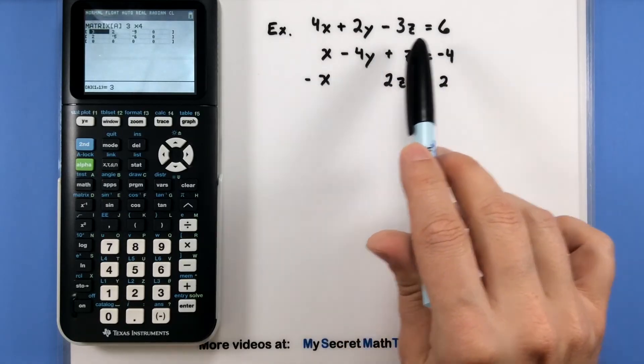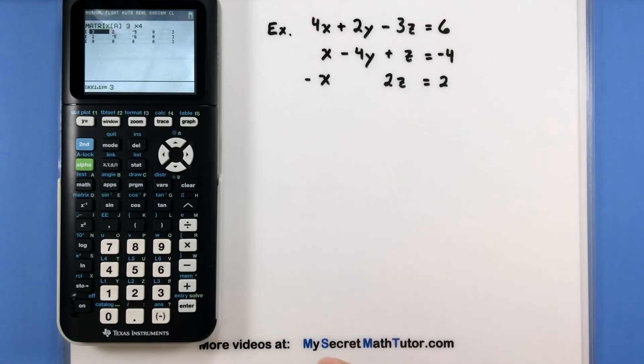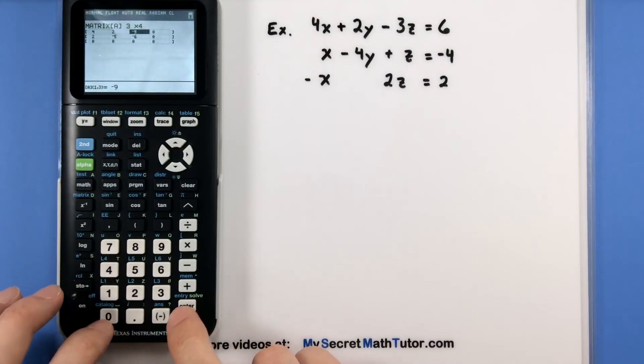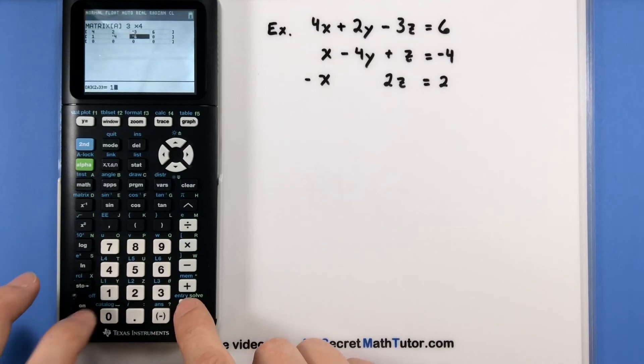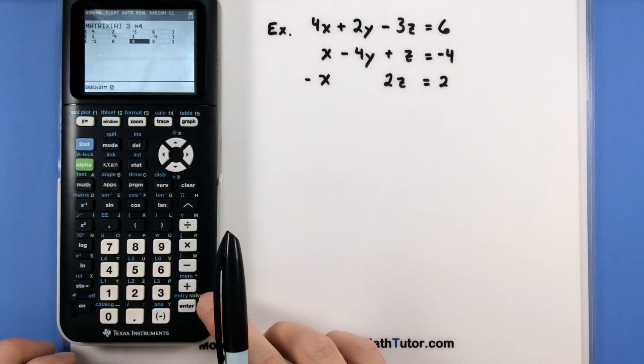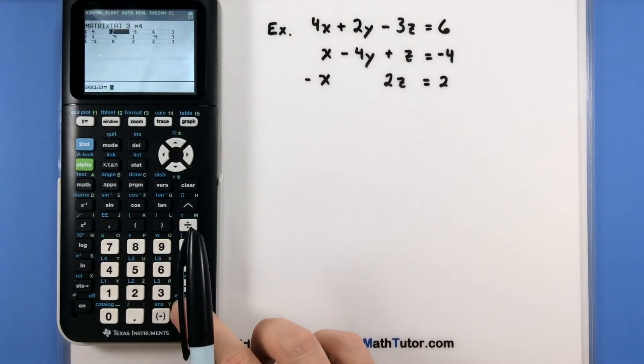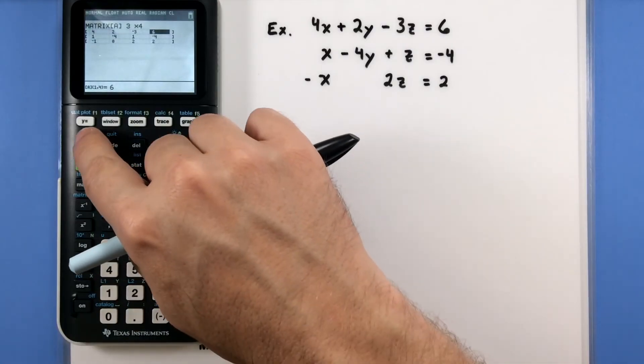And now we'll do all of these coefficients, making sure we're using our negative sign for any negative coefficients. 4, 2, negative 3, 6, 1, negative 4, 1, negative 4, negative 1. No coefficient here so we'll just use a 0, 2, and 2. So it's all entered in. Enter is not going to do anything so we'll press second quit.